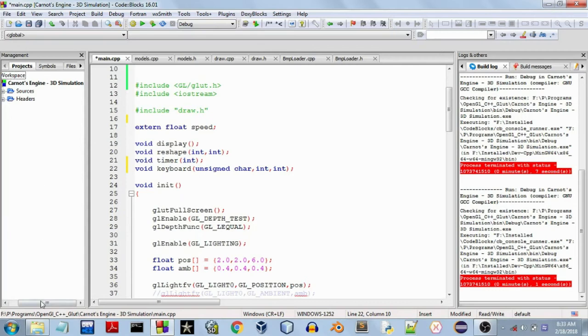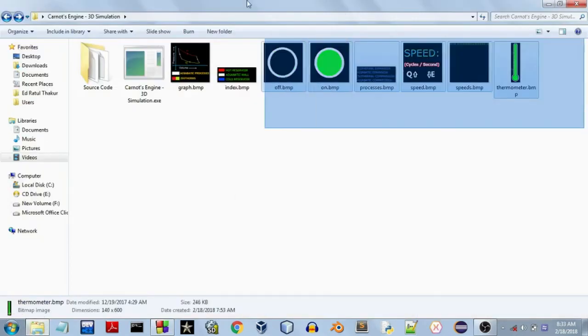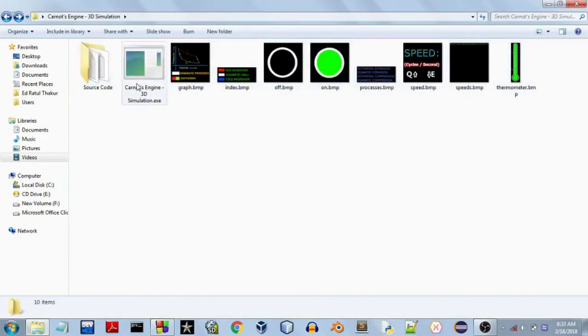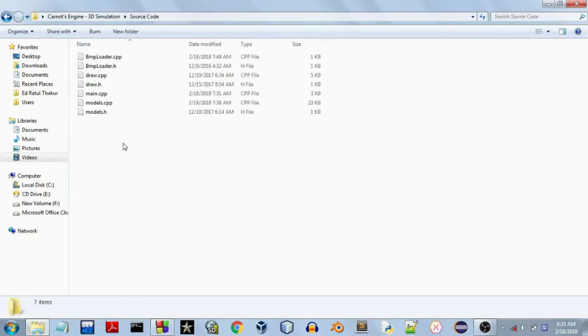You will get a compressed package and when you extract its contents it will look something like this. This contains the binary file and all the textures which are required by the application, and a folder with all the source codes.